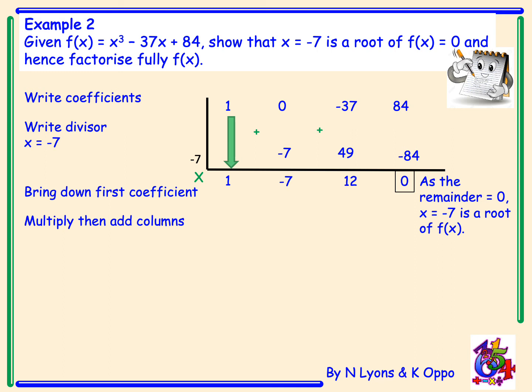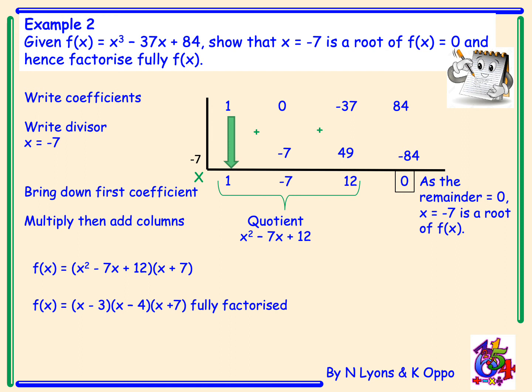It is important in the exam that you write a sentence to explain your findings. We then factorise fully by looking at our quotient, which is x² - 7x + 12. So f(x) can be written as (x² - 7x + 12)(x + 7) — since the root is x = -7, the factor must be x + 7. Factorising the quadratic gives (x - 3)(x - 4), so fully factorised: f(x) = (x - 3)(x - 4)(x + 7).